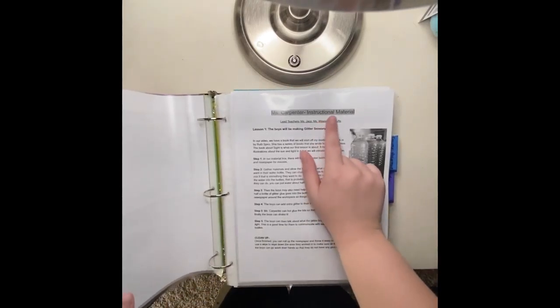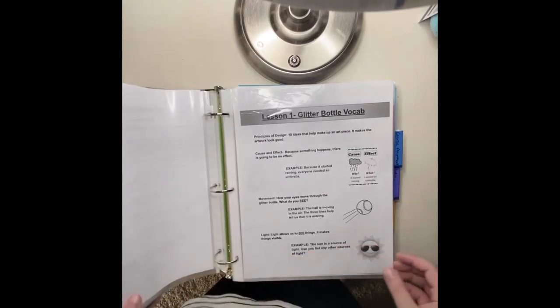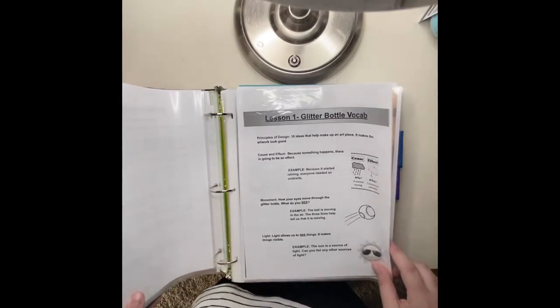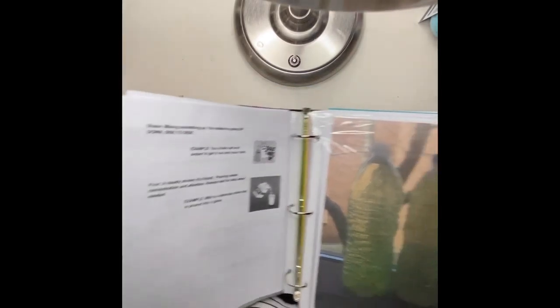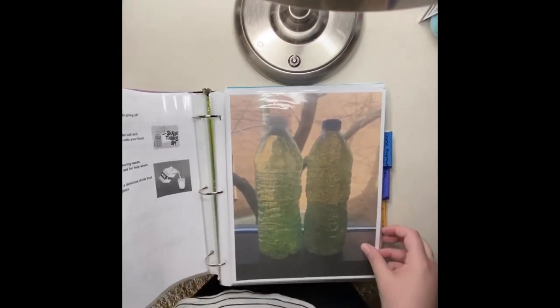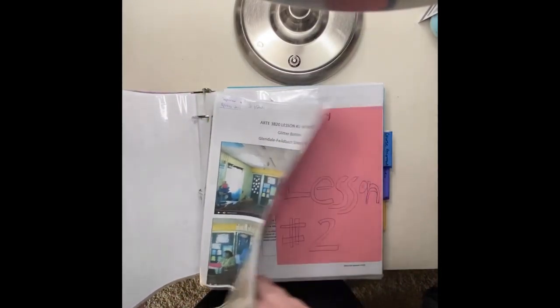Here's the instructional material for lesson number one. Here is the first vocab sheet for lesson one on both sides. Here's the picture for lesson one, and then here's my students doing the lesson.